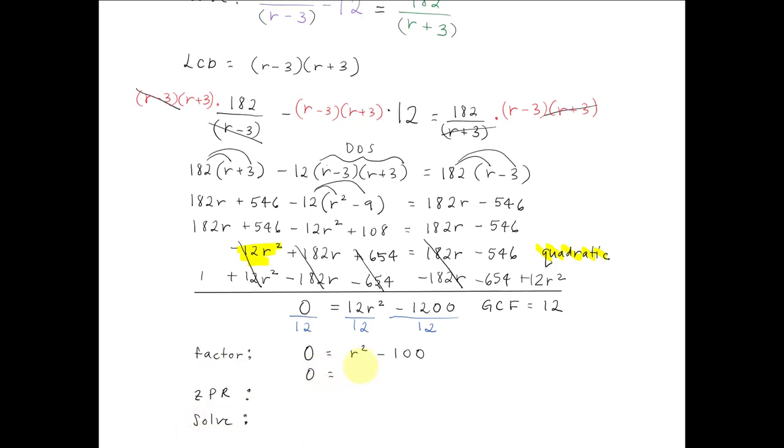So let's factor. We get 0 equals, this is a difference of two squares, so it'll be r minus 10, r plus 10. Apply the zero product rule and set each factor to 0. And then solve where r is equal to 10 or r is equal to negative 10.